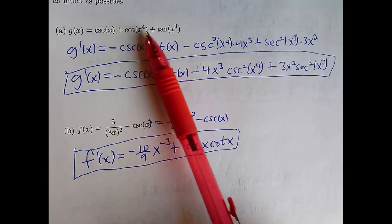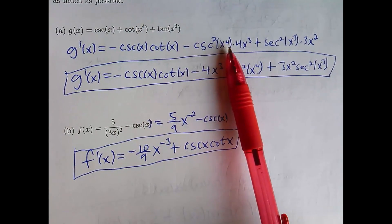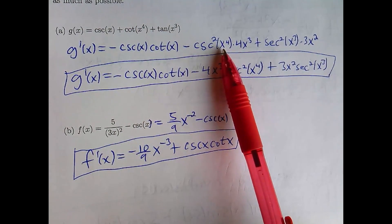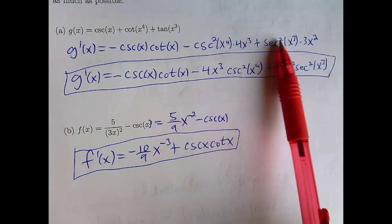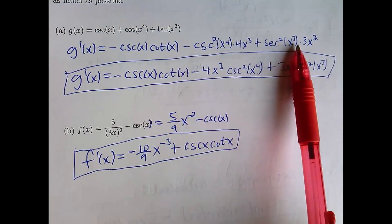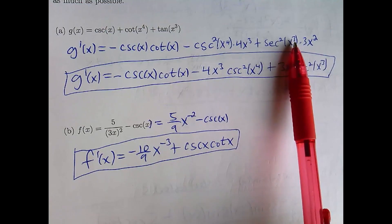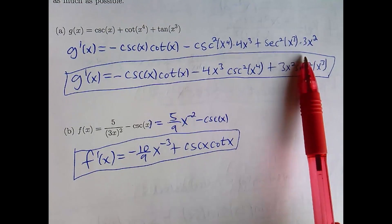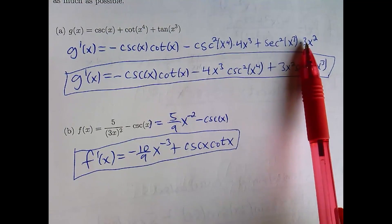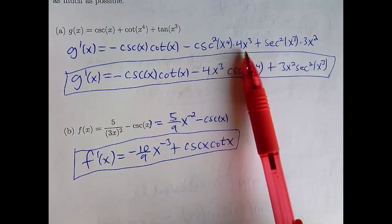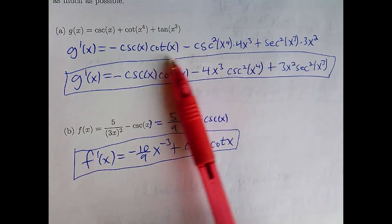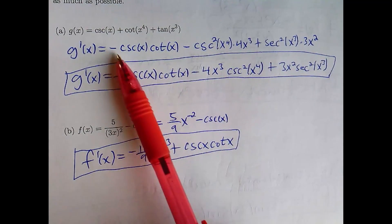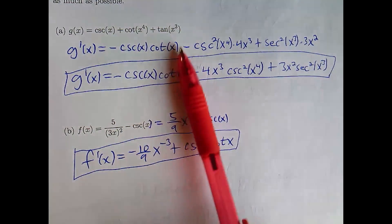There's an x to the fourth here, so you have to multiply by the derivative of the inside — that's the chain rule. The derivative of tangent is secant squared, and then you multiply by the derivative of the inside — chain rule again. Then you put the coefficients in the front. It's a solid question just to see if people know the derivatives.